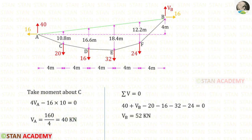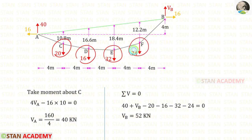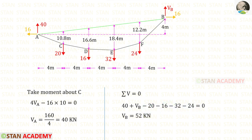Let us apply the rule sigma V equals 0 and find VB. VA and VB are acting upwards, so both are positive. The four loads are acting downwards, so all four are negative. For VB, we will get 52 kN.